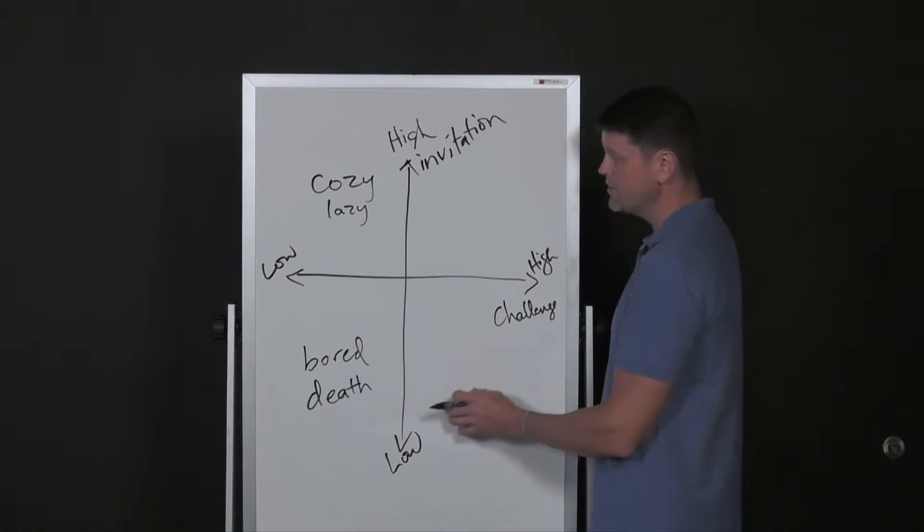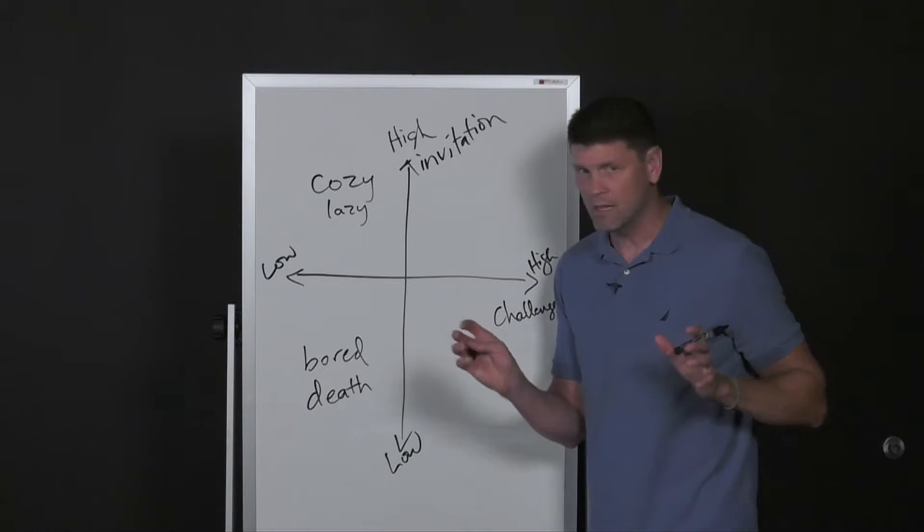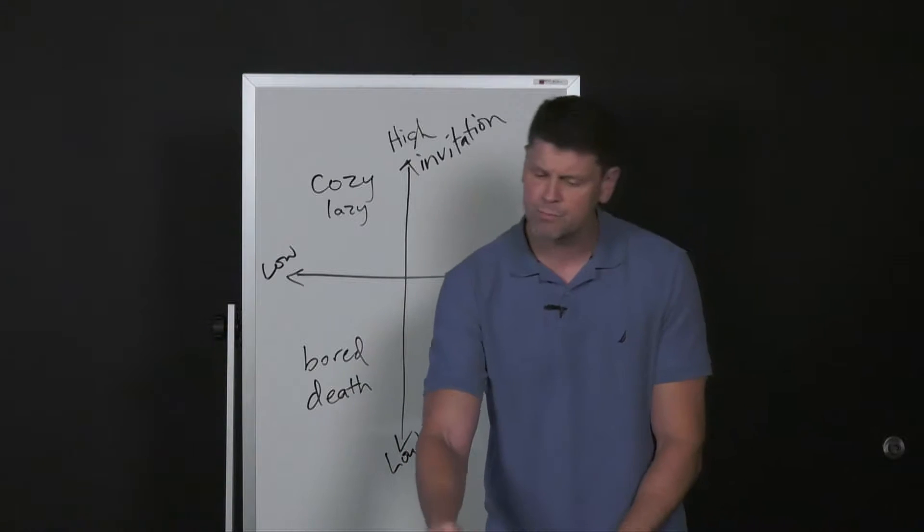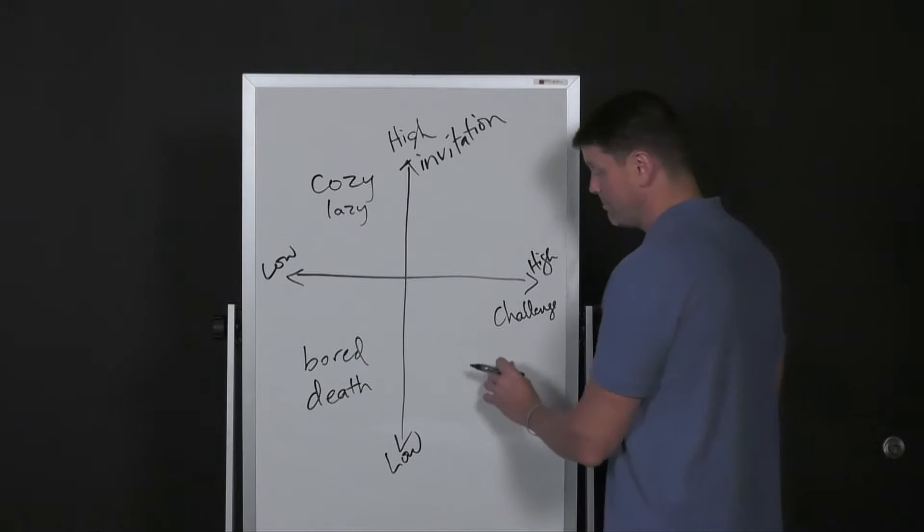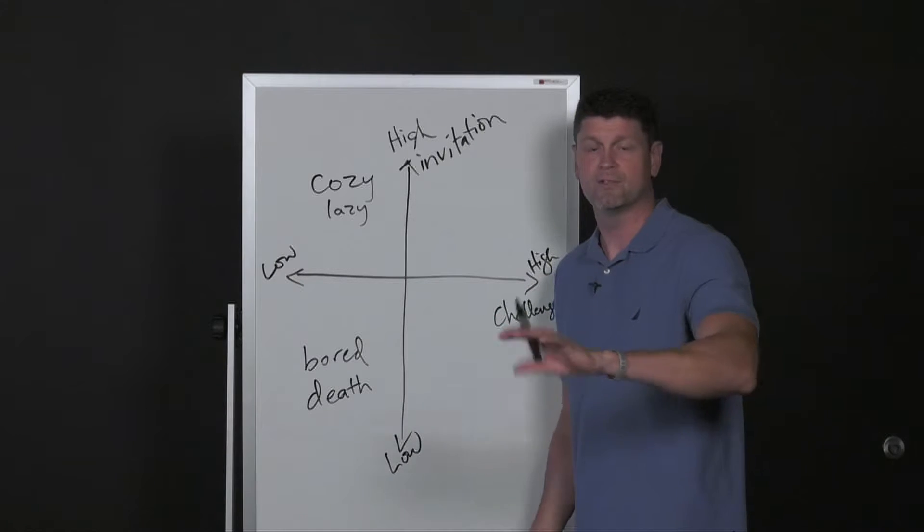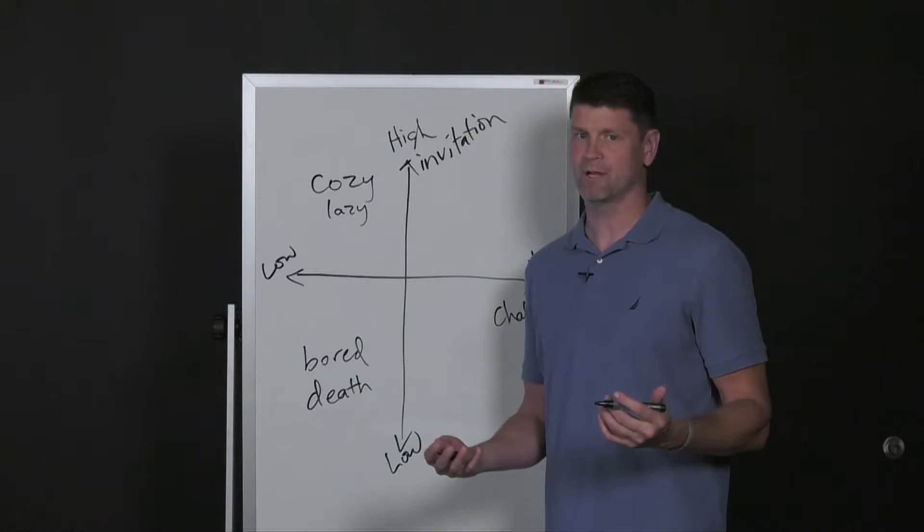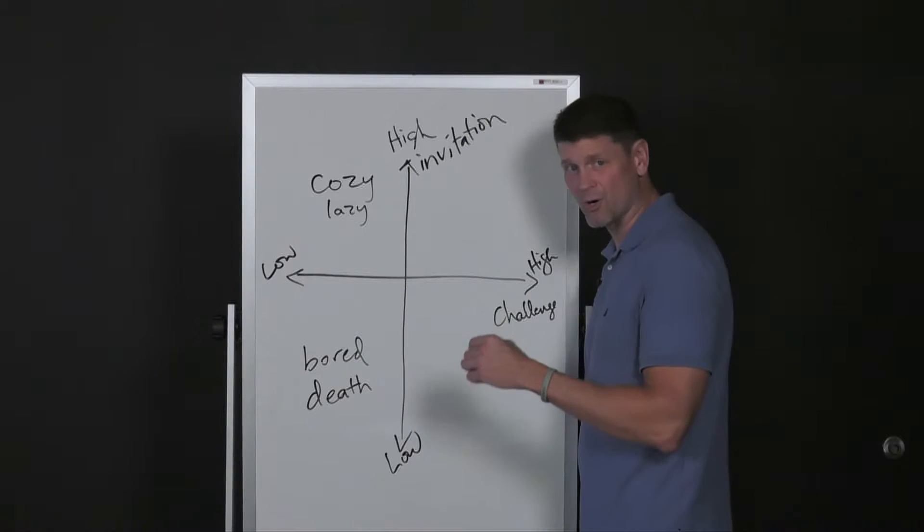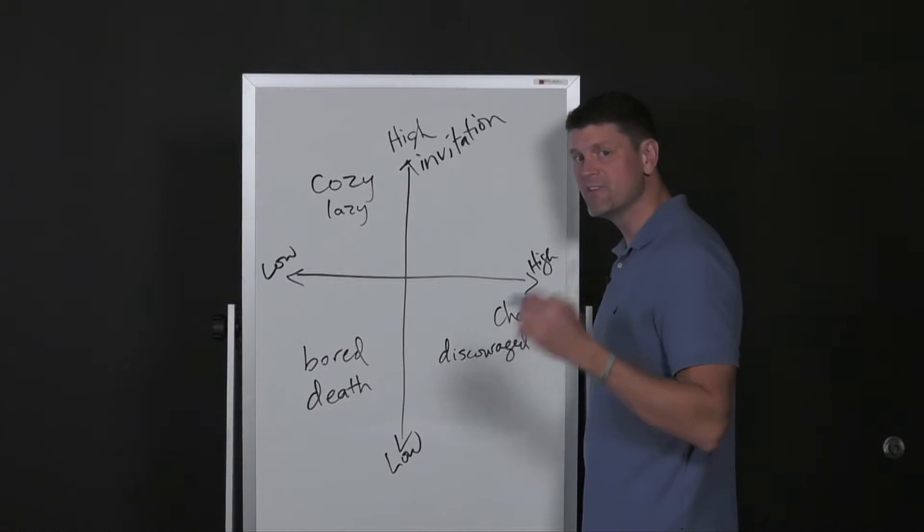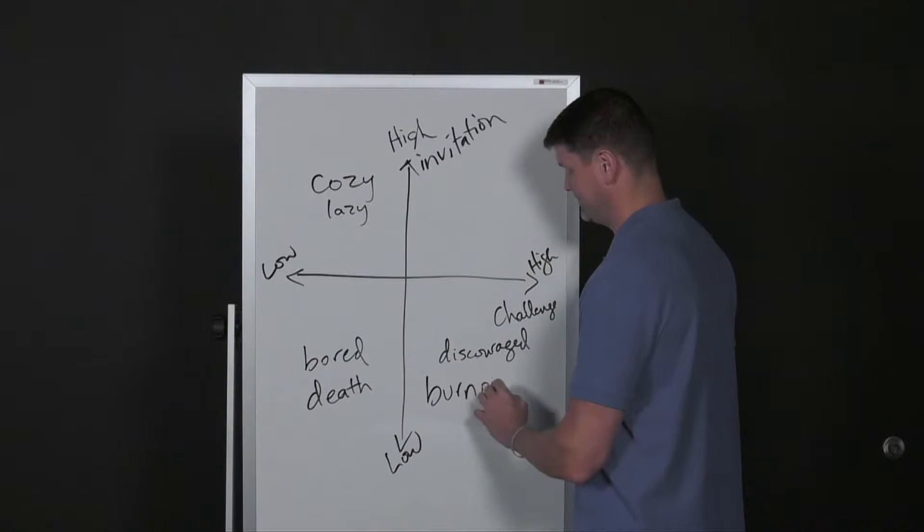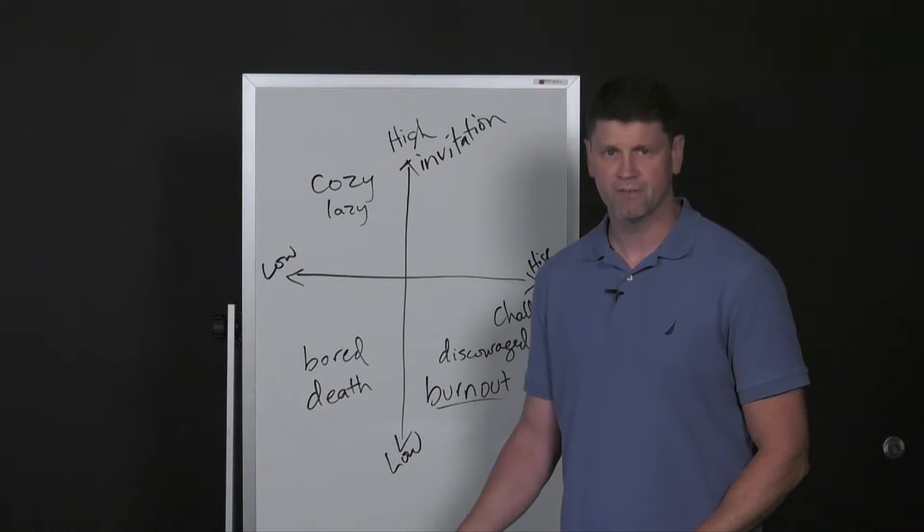In this quadrant, what if you have low invitation but you have a high challenge? The job, the challenge is always before us. There's a lot to be done. We've got to get the service projects done, get our numbers up, budget numbers up, baptisms up. We've got a lot of work to be done, but I'm going to send you to go do these things. There's very little invitation, personal relationship as these tasks are being done. What kind of attitude does that create? That's going to be kind of discouraging. If you're discouraged while working, that's eventually going to lead to burnout. If you're doing a lot of work with very little relationship and encouragement, you're going to probably eventually burn out.